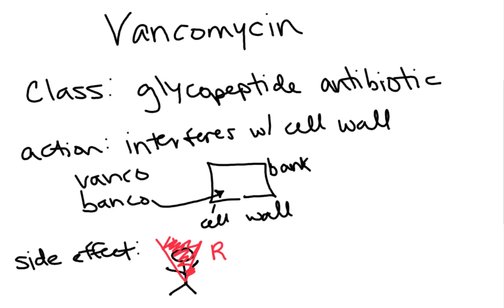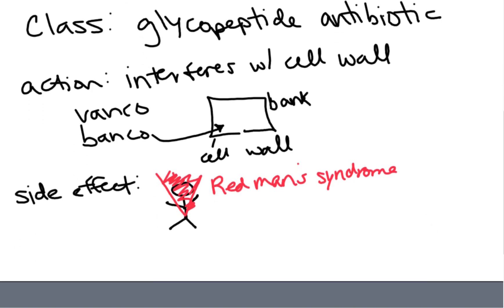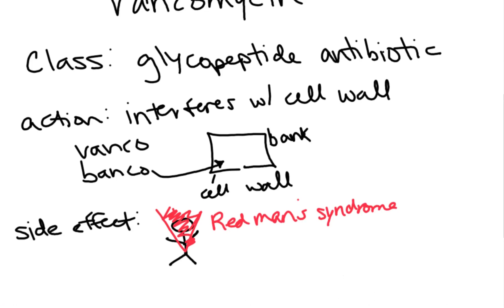Red Man Syndrome — I've had that question on several exams in nursing school and on certification exams. The other thing to remember with vancomycin is we look at peaks and troughs. Think V for vanco: if you look at the V shape, you have two peaks and one trough. That's vancomycin.